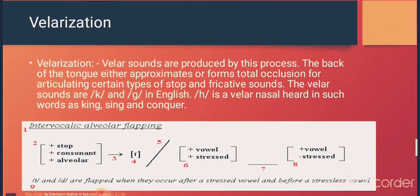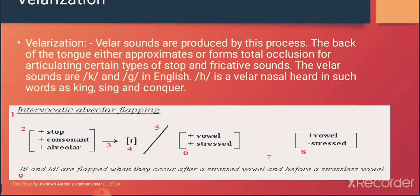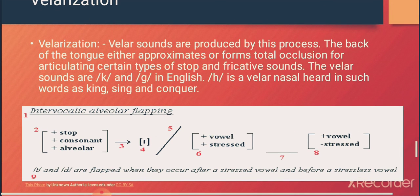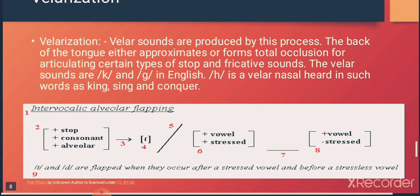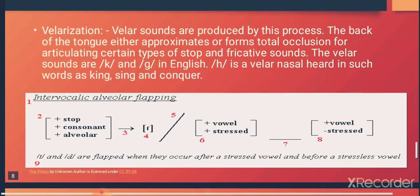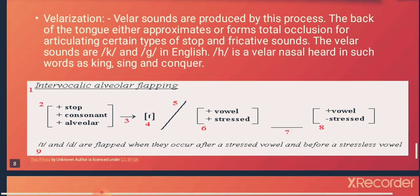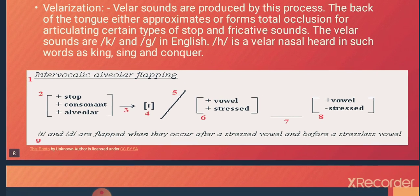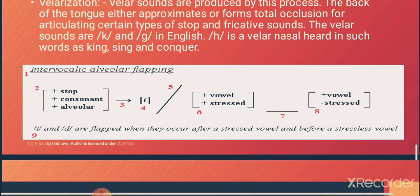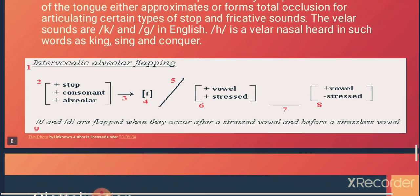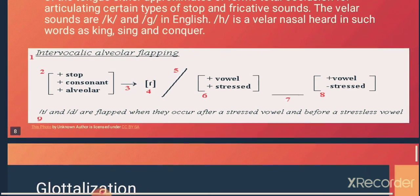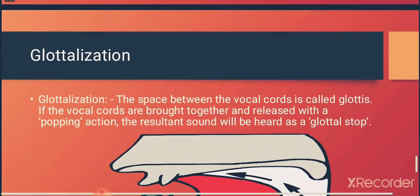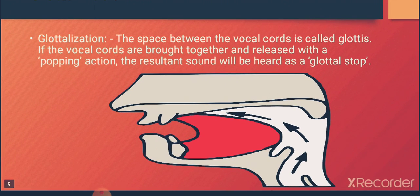Velarization is the process by which velar sounds are produced. The back of the tongue plays an important role here — it forms total occlusion in articulating certain types of stops and fricative sounds. The velar sounds include 'k' and 'g' in English, and 'h' is also a velar. The nasal 'ng' is heard in such words as 'king', 'sing', and 'conquer'.